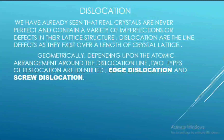Real crystals are never perfect and contain a variety of imperfections or defects in their lattice structure. Dislocations are line defects, as they exist over a length of crystal lattice. Geometrically, depending upon the atomic arrangement around the dislocation line, two types of dislocation are identified: edge dislocation and screw dislocation.